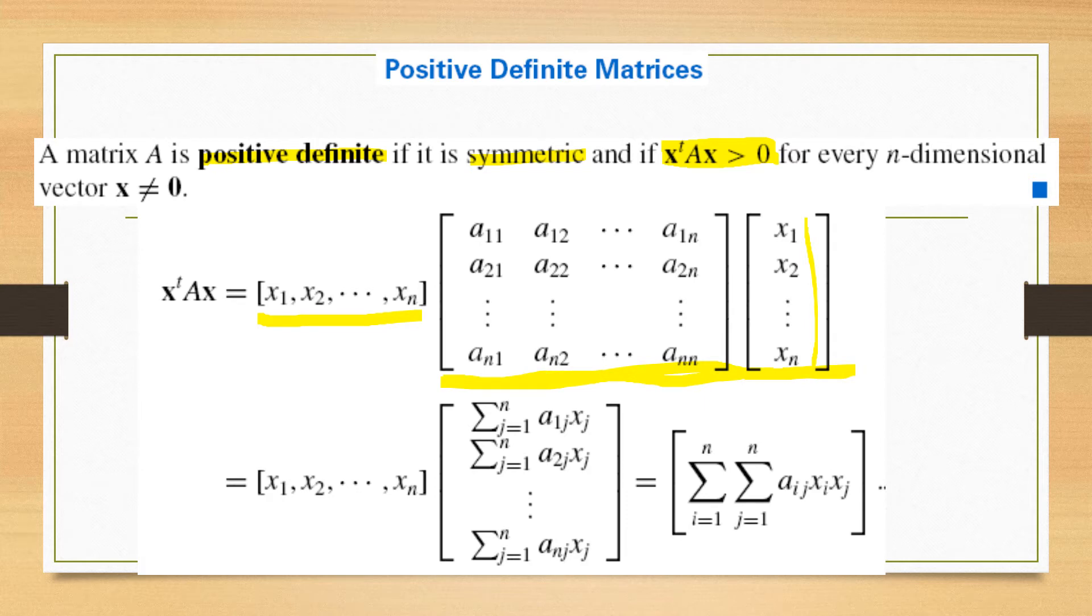We obtain this result which is written in summation form. And after this, we multiply this row vector with this vector.